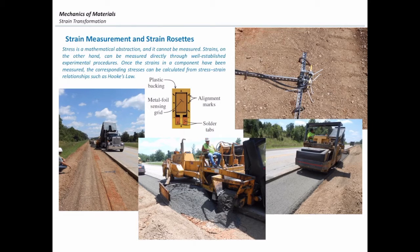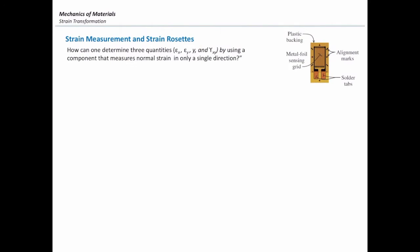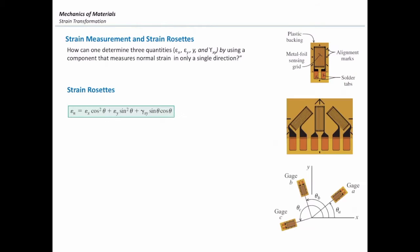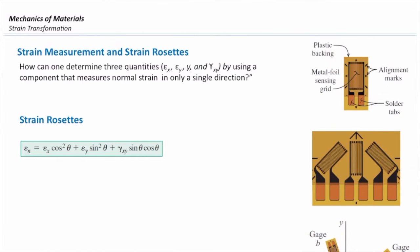So I just wanted to show you some examples about why or when we are using strain gauges. For mechanics of materials, we use strain gauges mostly for answering this kind of problem. We call them strain rosettes. What are these strain rosettes? Strain rosettes are used for determining state of stress or state of strain at a certain point.